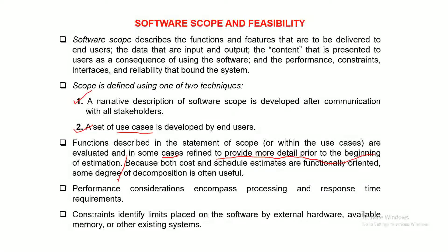If you know a few more details about what you are going to develop, more knowledge will definitely help you to plan well in advance. Performance considerations may include processing and response time requirements. Constraints identify limits placed on a software by external hardware, available memory, or other existing systems. All these are constraints. The next point is resources.